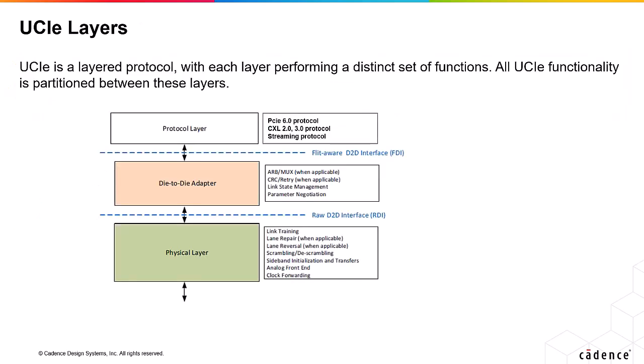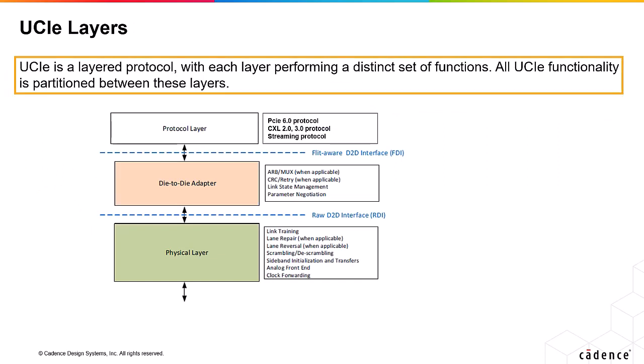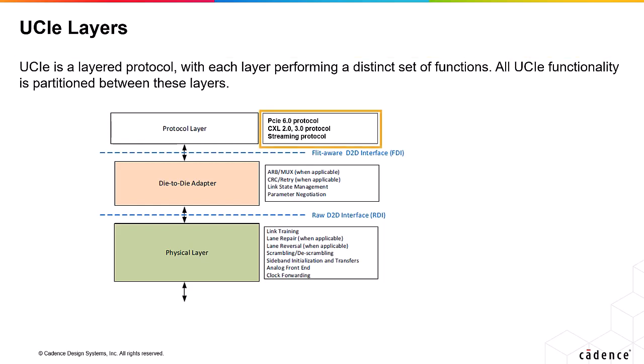Here we show the high-level view of all UCIE layers and their functionalities. In the UCIE protocol, each layer performs a distinct set of functions, and all UCIE functionality is partitioned between these layers. The protocol layer supports PCIe, CXL, and streaming protocols. The D2D adapter layer supports link state management and parameter negotiation, and also supports arbitration, multiplexer, CRC, and retry functionalities when applicable.